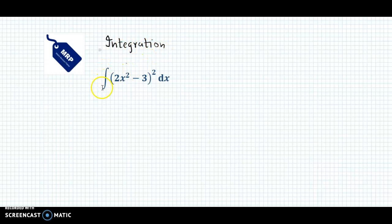Now here we have to integrate the function (2x² - 3)² with respect to x. First of all, we name this function as I, or rather the integral as I.